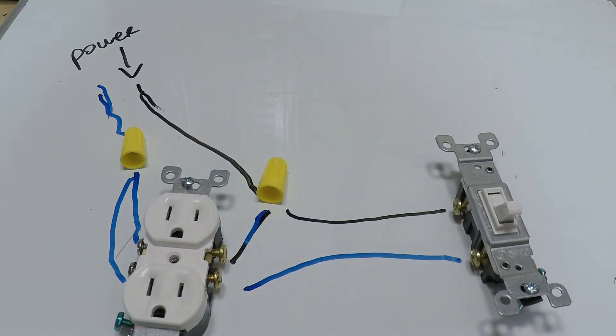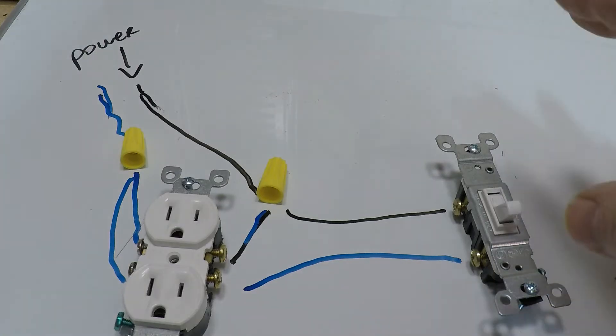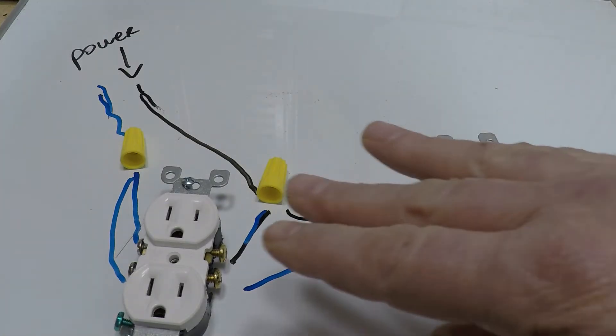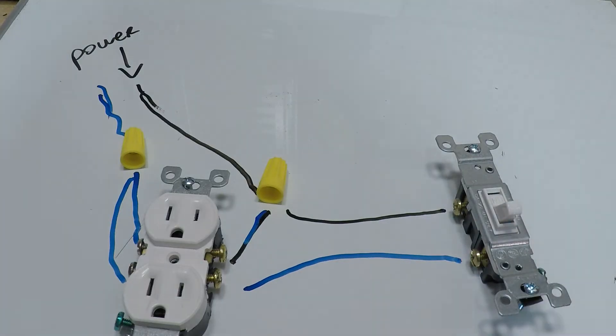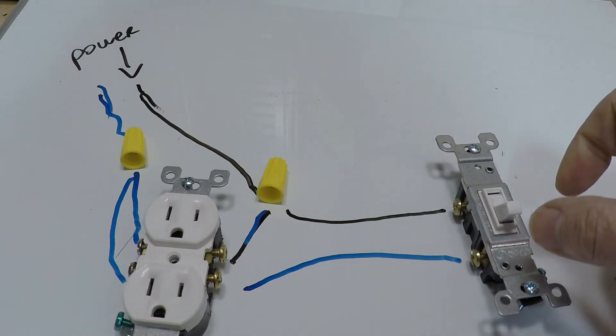It allows the power through the switch and back down to this one, and this is where you'd plug the lamp in. Now let's say you want to eliminate this and you want this outlet to not be working off of the switch anymore.